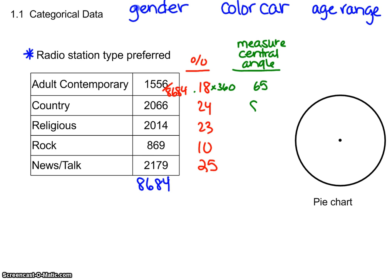24% of 360 degrees goes to country, and so on for each category. As a check, the percentages should add up to about 100% and the angles should add up to about 360 degrees. There might be some rounding error, but we should be close.